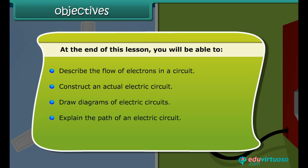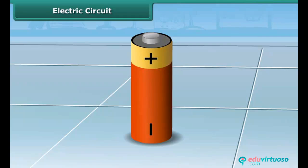An electric cell or a dry cell is the source of electricity for the bulb to glow.